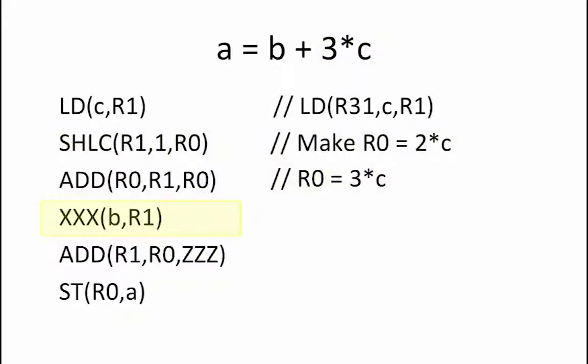Next, we want to once again get the value of a variable from memory. As we saw before, xxx equals load in order to load the contents of address B into register R1. We are almost done. We now just need to add R1 equals to B to R0 which equals 3 times C and then store the result back into memory variable A. Since the store instruction is using R0 as its source, that means that ZZZ must also be R0 so that the correct value ends up in variable A.